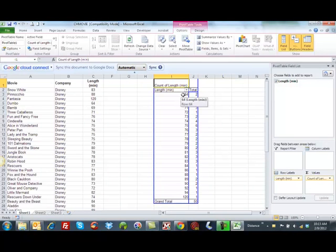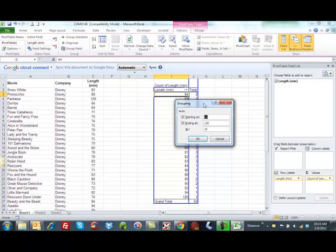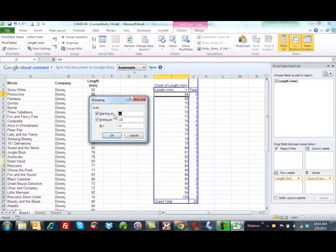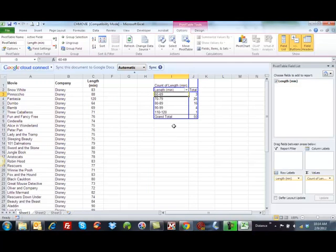And now what it first does is the first thing it does is it adds them. So we need to get rid of that and change it to count. And we do that in the value field setting. We go to count and click OK. And so now we can see that we had two that were 64 minutes and one that was 69 and one that was 70 and so on. Well that's great, but we want to make this shorter.